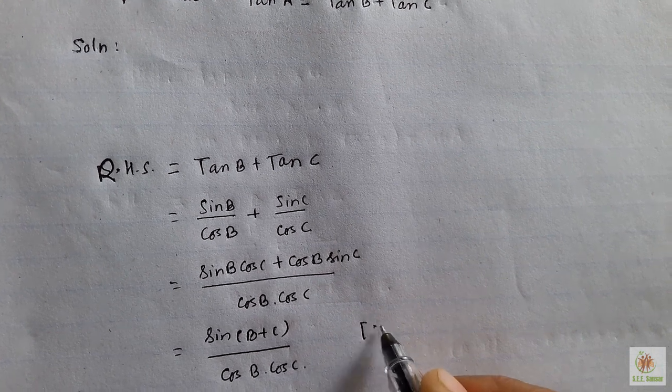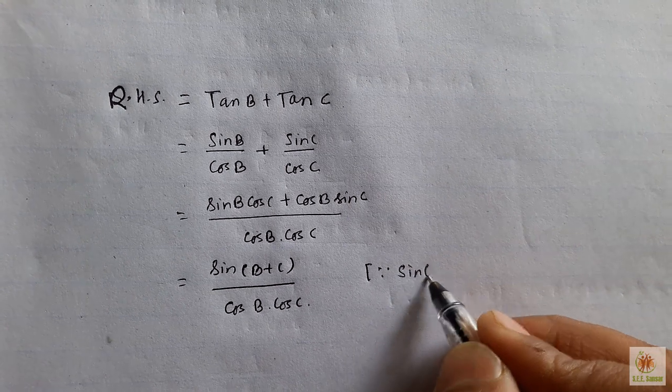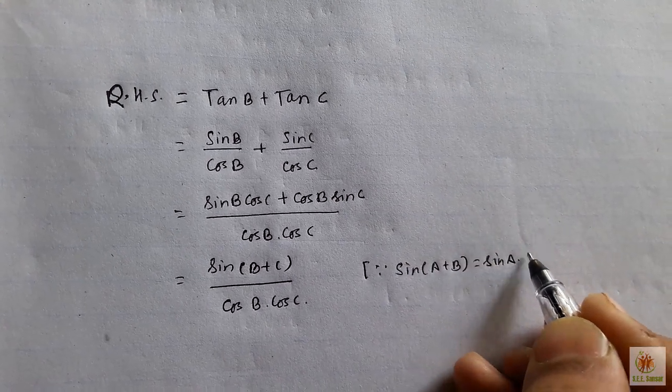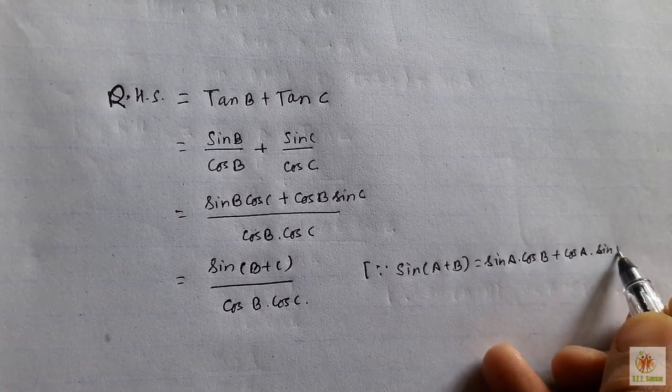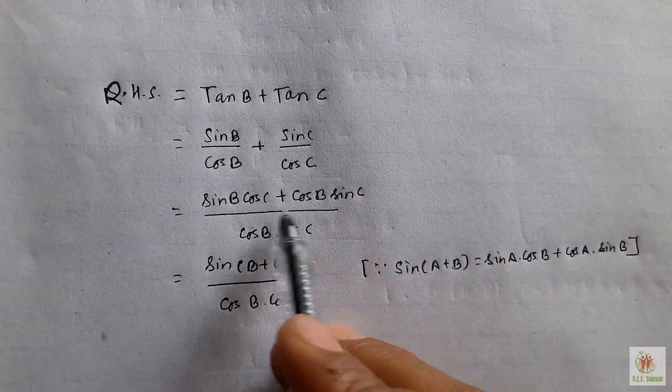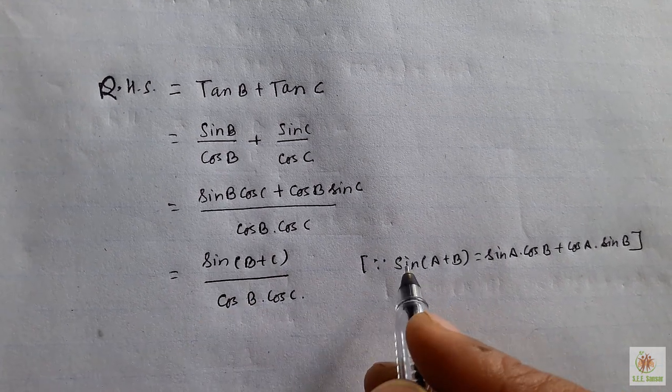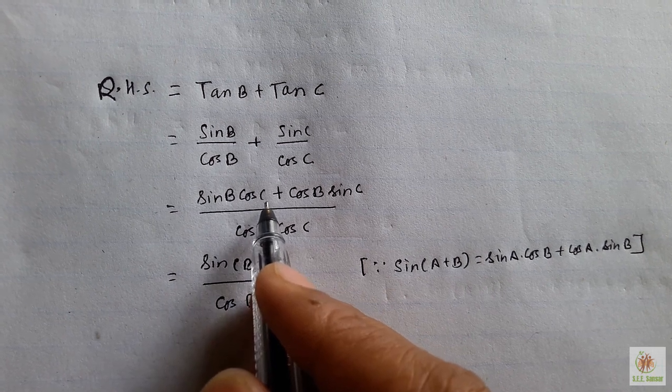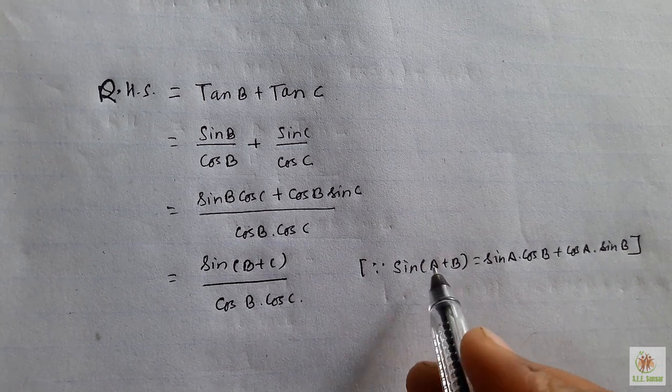The reason why that has happened: sin(A + B) equals sin A dot cos B plus cos A dot sin B. When you compare this expression with this formula, suppose this B is acting as A and C is acting as B, then sin A dot cos B and cos A dot sin B. The formula becomes A plus B.